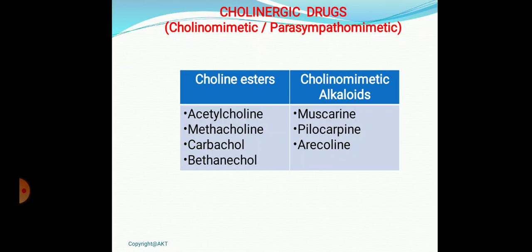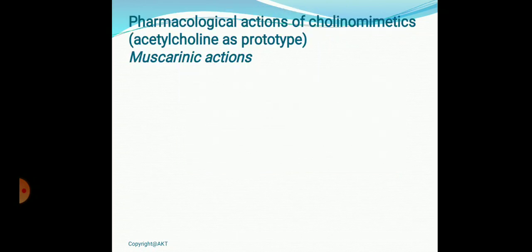Starting with the classification: two categories — cholinoesters and cholinomimetic alkaloids. Cholinomimetic alkaloids are obtained from plant sources. Among cholinoesters, acetylcholine itself can be used as a drug, but synthetic drugs are available: methacholine, carbachol, and bethanechol — try to learn them together. Cholinomimetic alkaloids include muscarine, which stimulates muscarinic receptors (that's why the receptors are named muscarinic), pilocarpine, which is most important, and arecoline, obtained from areca.